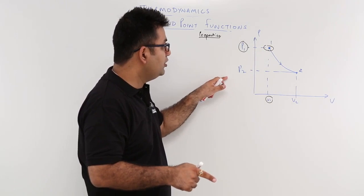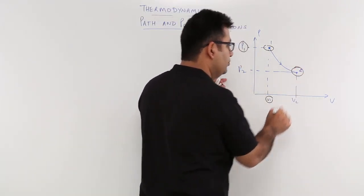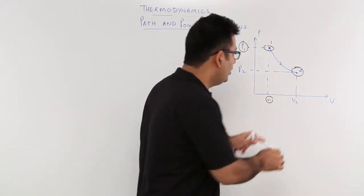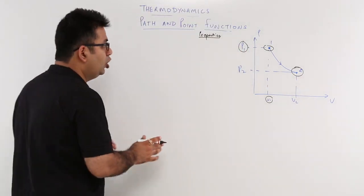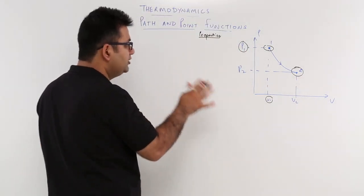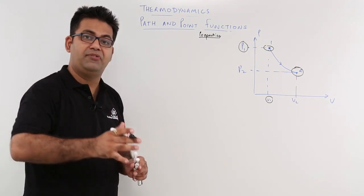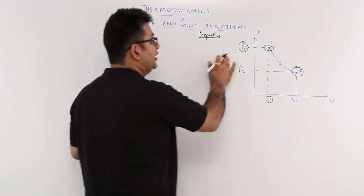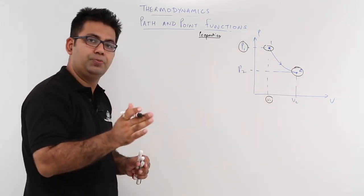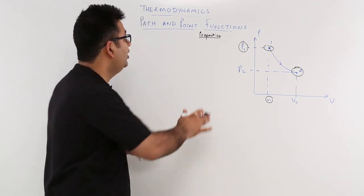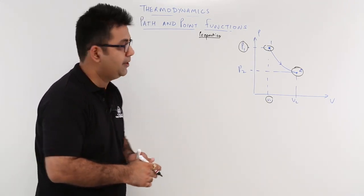Similarly, P2 is only defined at state 2, and V2 is only defined at state 2. So those properties or functions whose values depend upon those particular states or those particular points are called point functions or point properties.